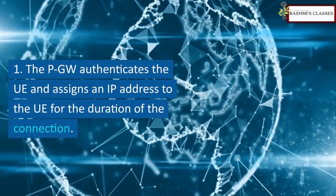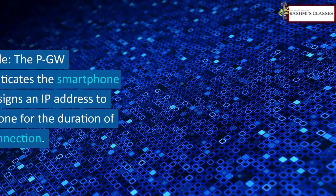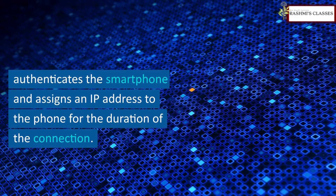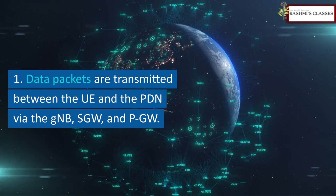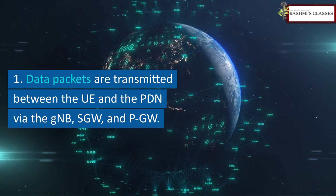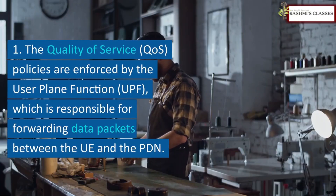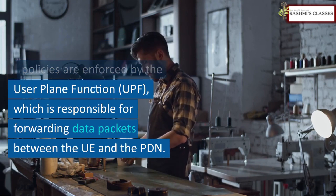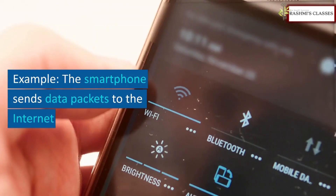The PGW authenticates the UE and assigns an IP address to it for the duration of the connection. For example, the PGW authenticates the smartphone and assigns an IP address to the phone. Data packets are then transmitted between the UE and the PDN via the gNB, SGW, and PGW. Quality of Service policies are enforced by the User Plane Function (UPF), which is responsible for forwarding data packets between the UE and the PDN.